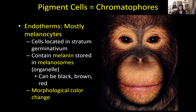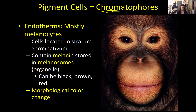Pigment cells in animals are called chromatophores — 'chroma' means color. These are the cells that display the color of an animal's body. The kind of chromatophores you have can often be determined by what kind of metabolism you have, whether you're an endotherm or an ectotherm.